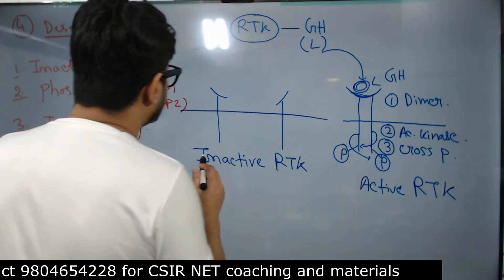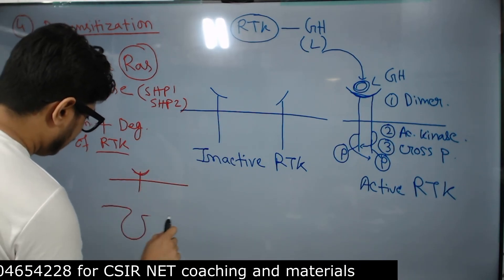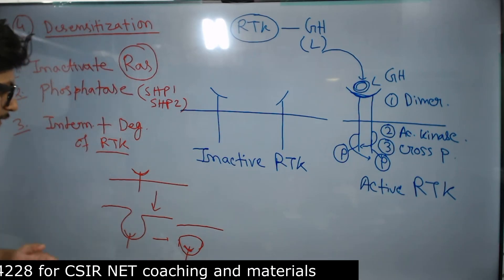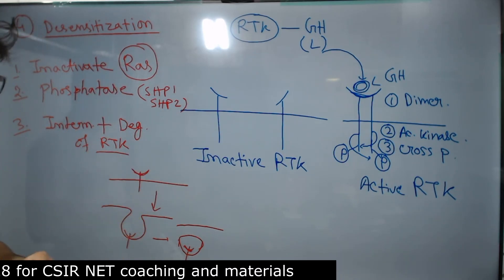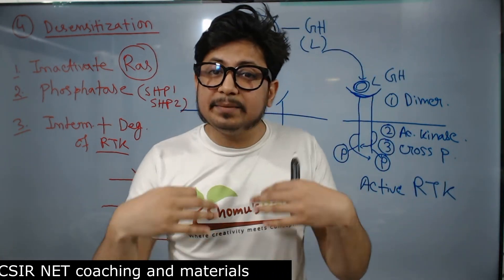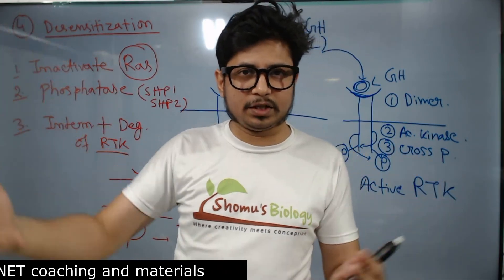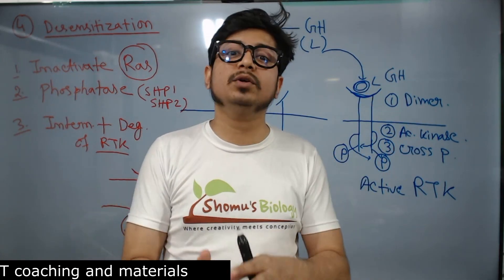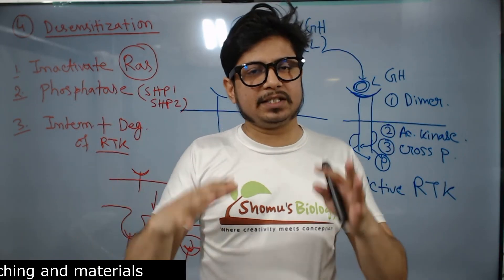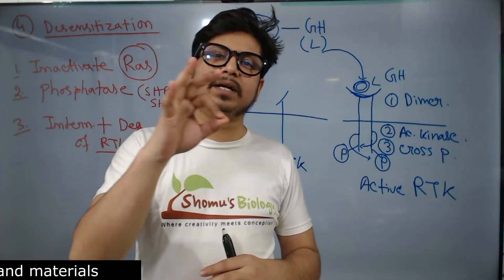The third and final method of desensitization is internalization and degradation of RTK. Basically the RTK is engulfed inside the cell as an endosome and then degraded. In that way we can desensitize the pathway. It is important to desensitize and stop the receptor tyrosine kinase pathway because excessive growth, proliferation, and division can lead to formation of a tumor, which can be cancerous if transformed.